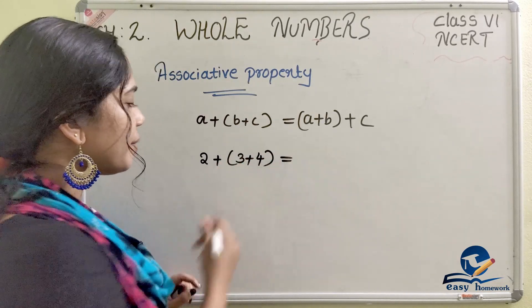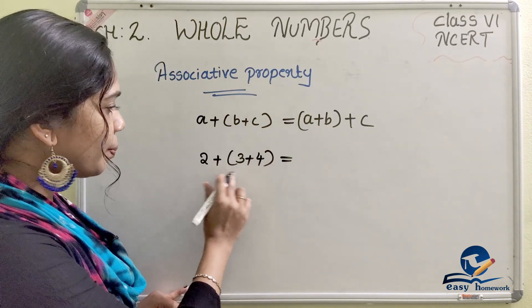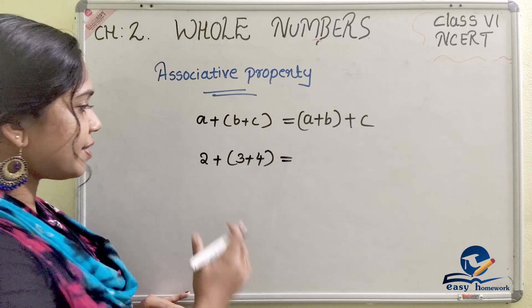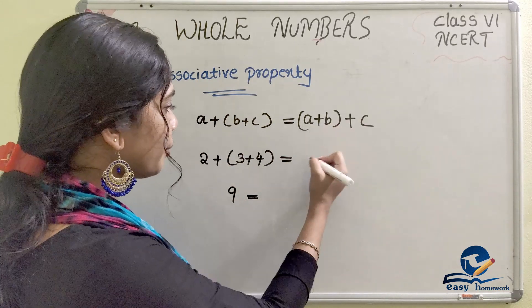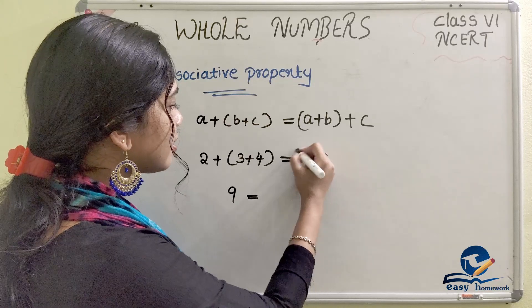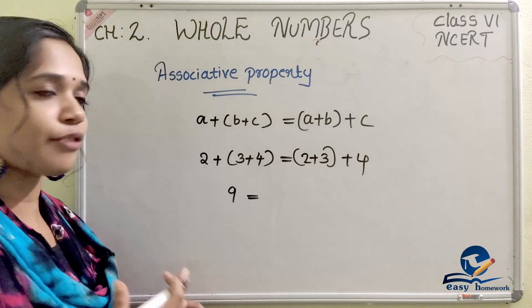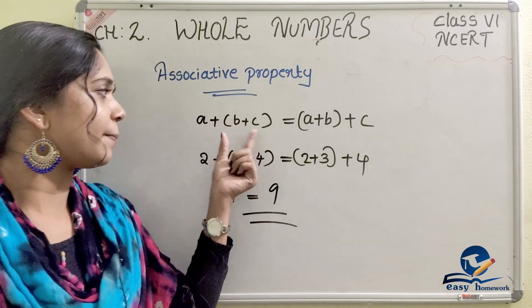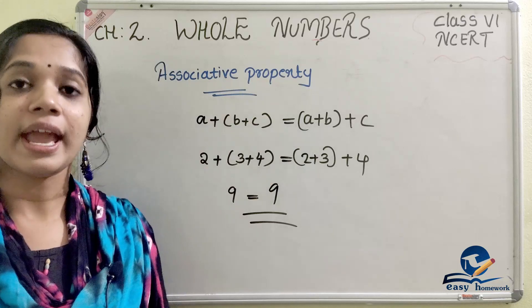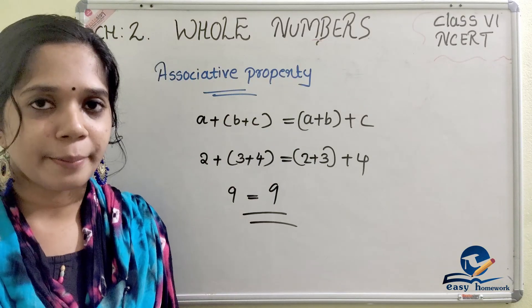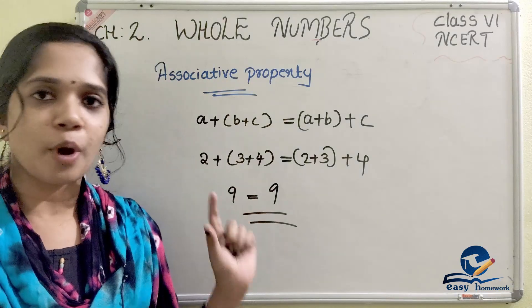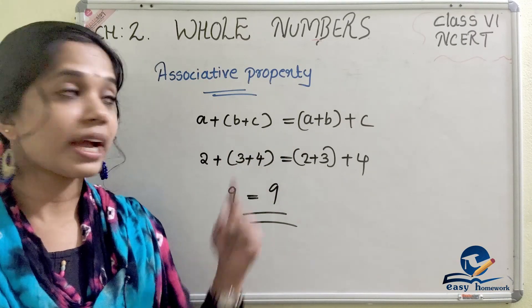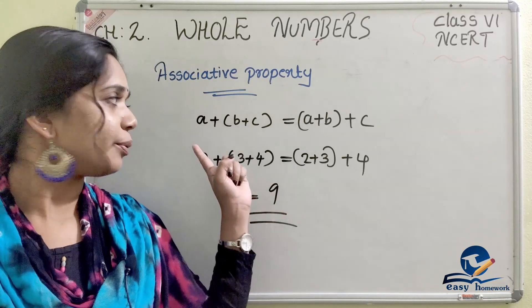Here we have: 2 plus (3 plus 4). That is 3 plus 4 equals 7, and 7 plus 2 equals 9. Then in the other order: (2 plus 3) plus 4 — that is 2 plus 3 equals 5, and 5 plus 4 equals 9. The result is the same. That is A plus (B plus C) equals (A plus B) plus C. Addition is associative for whole numbers.